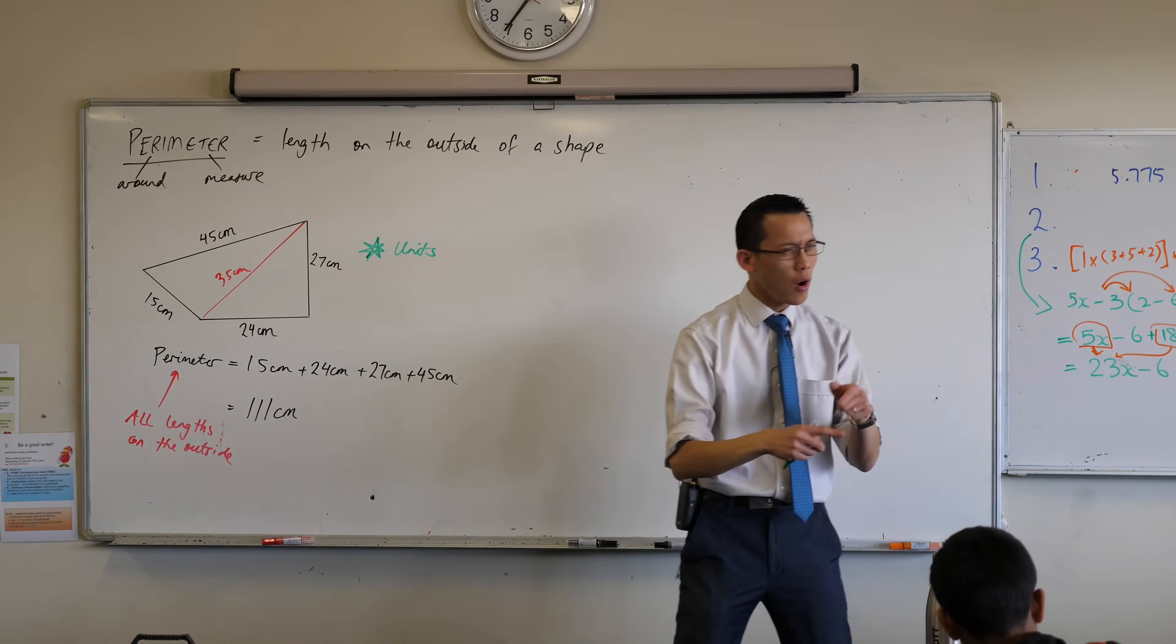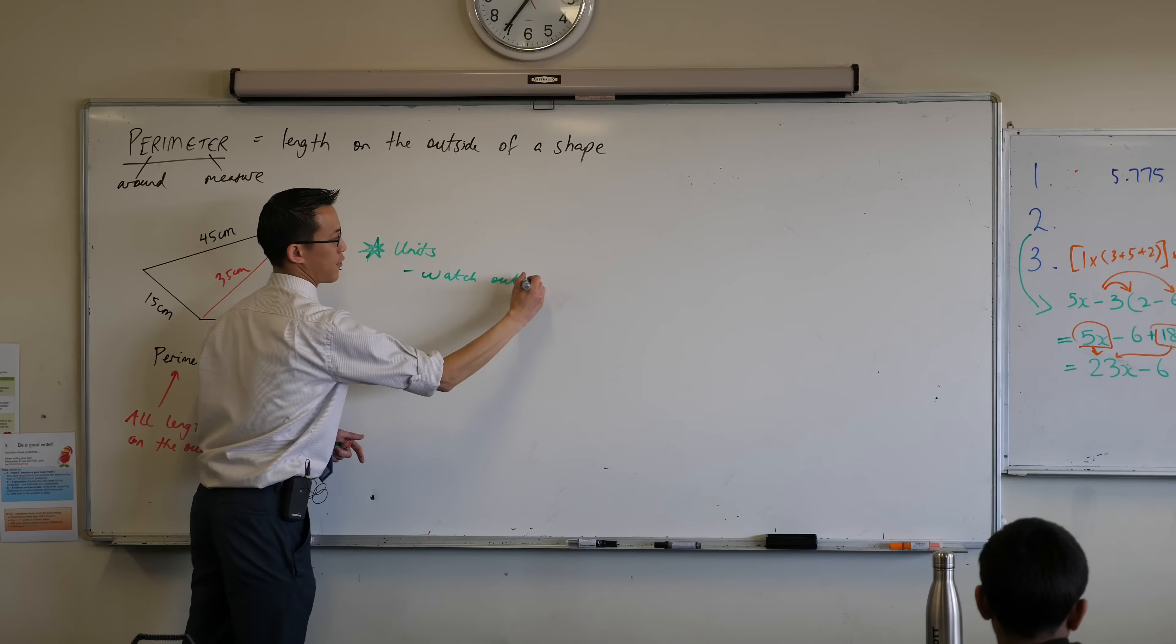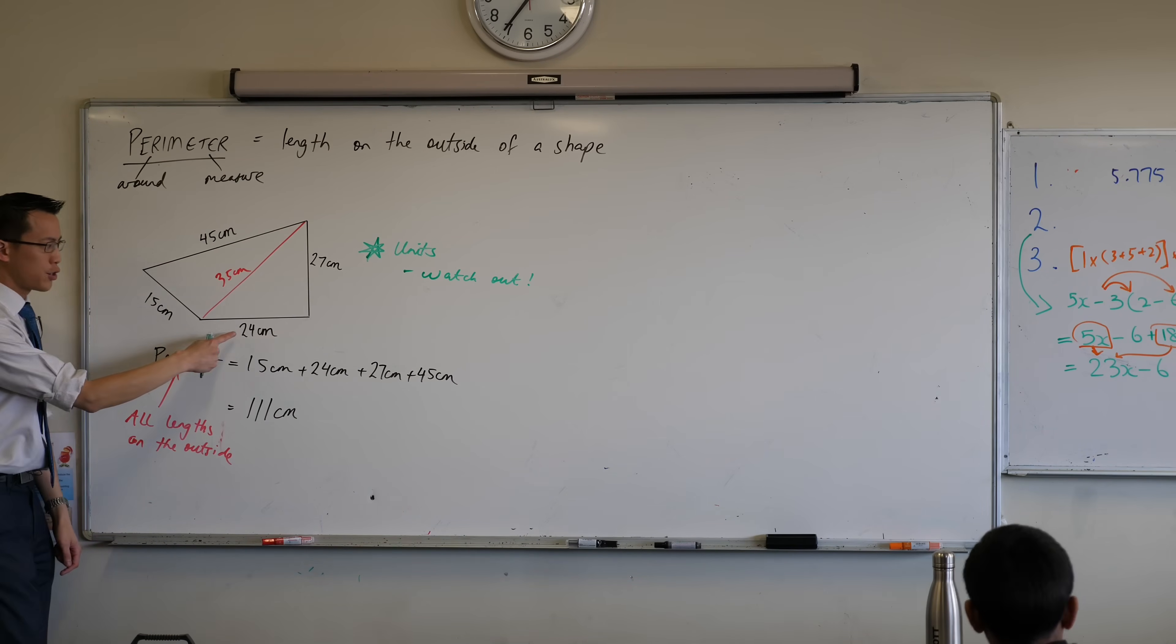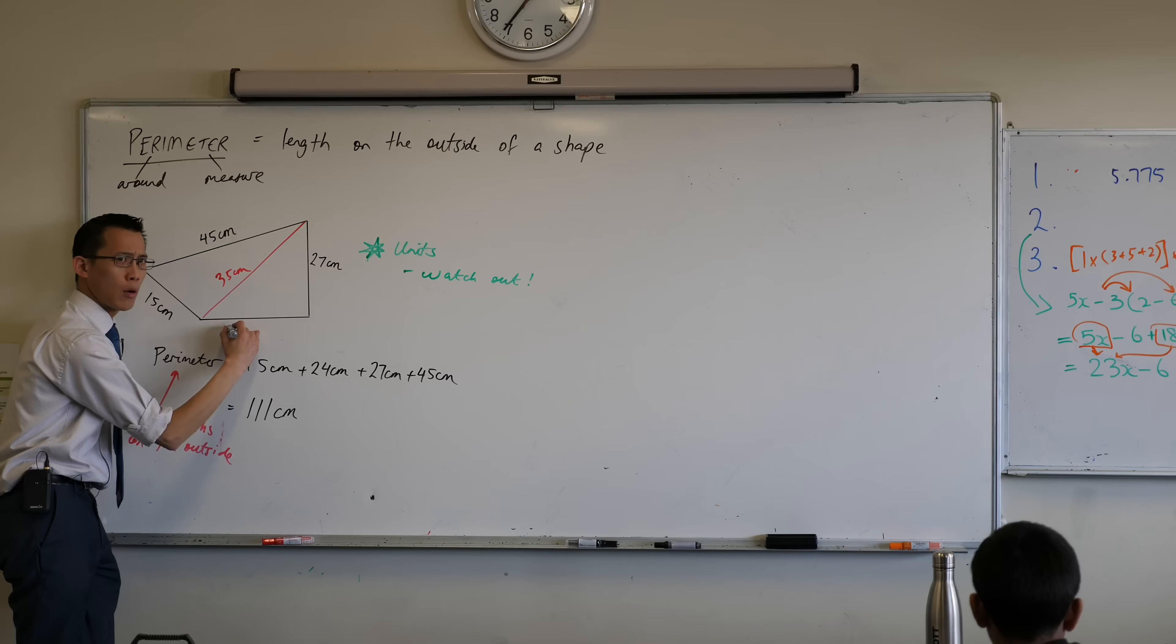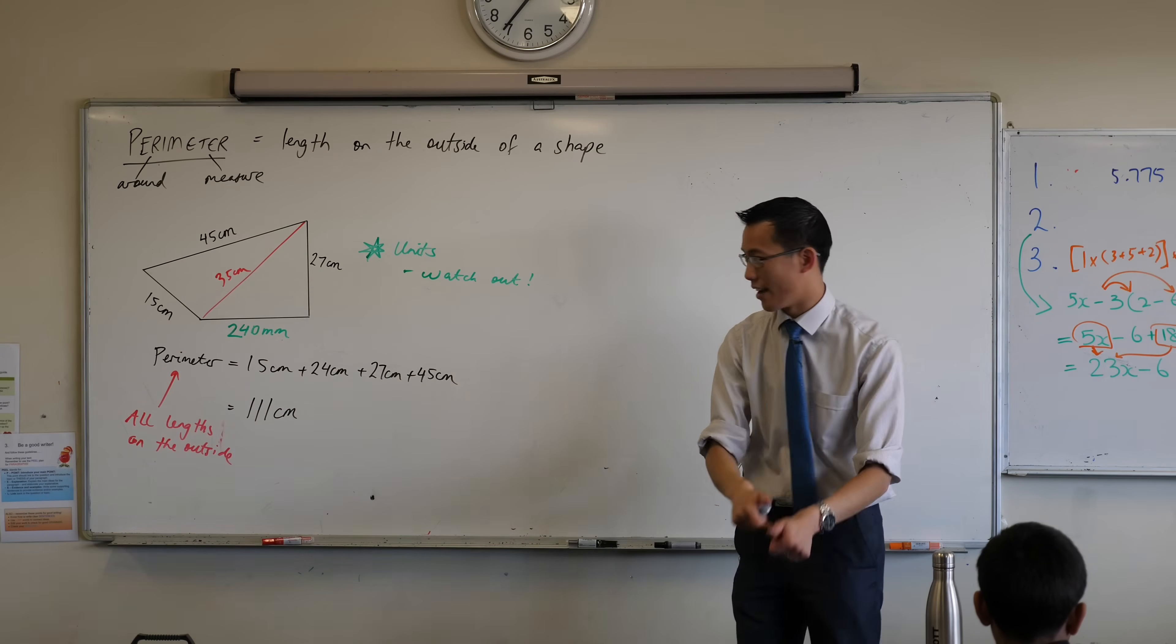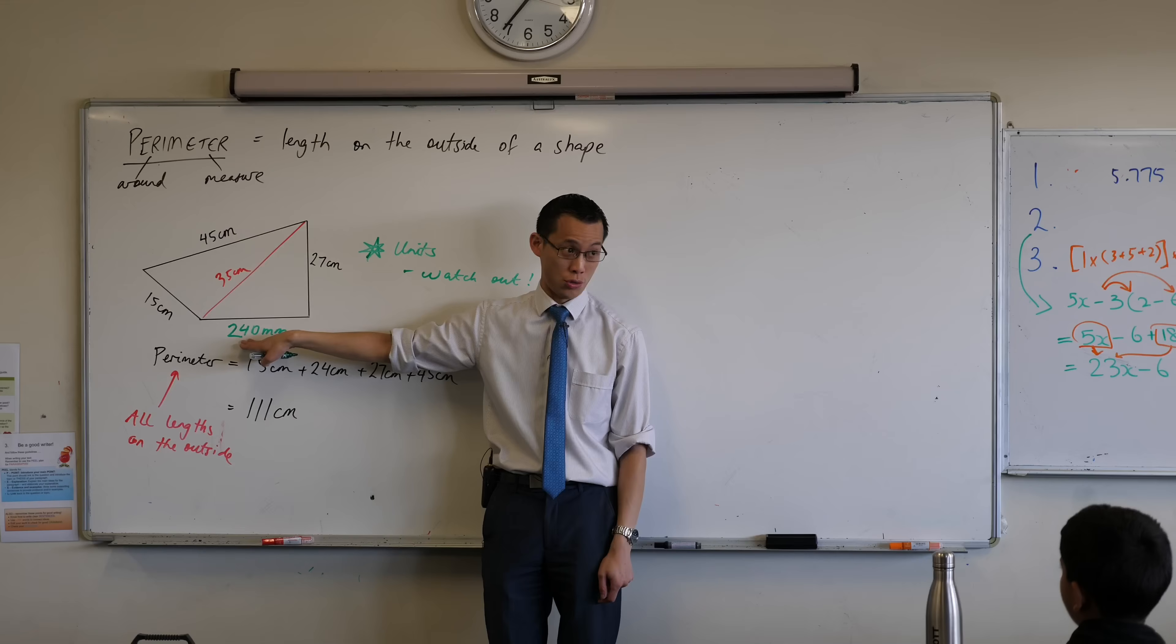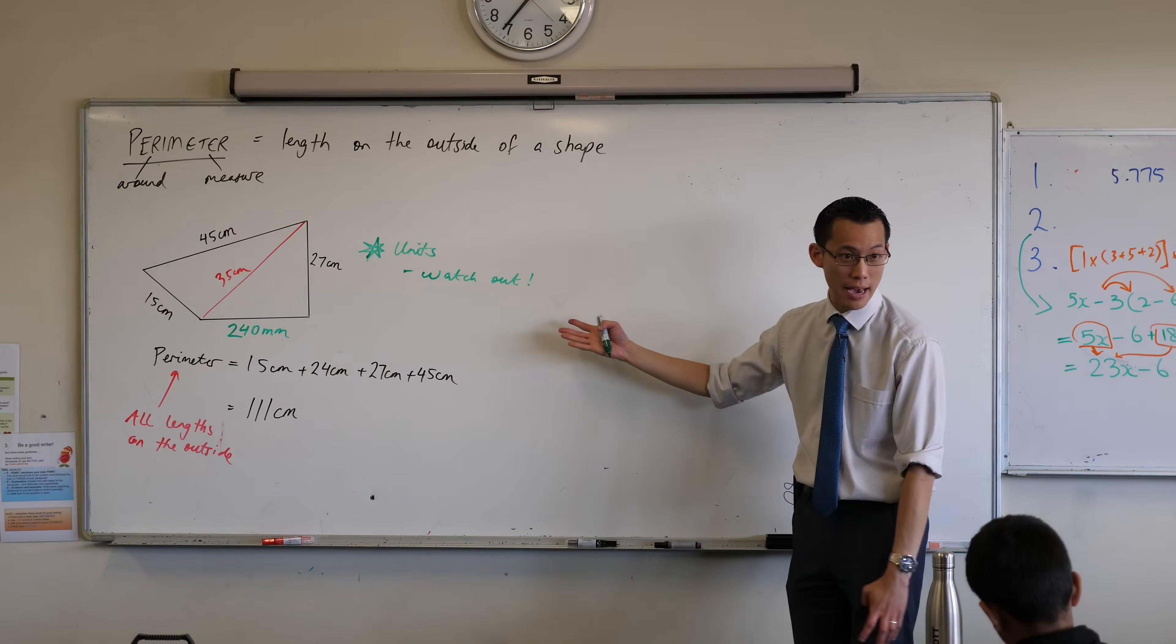Number one, watch out, they might be different. Because for instance, let's have a look at the one that I've drawn up here on the board. I wrote 24 centimeters here, but I didn't have to. I could have just as easily have written, what would that be in millimeters? 240 millimeters. That would still be the length of that side. But of course, if I went to my calculator and I added 15, 45, 27, and 240, then I'm not going to get the right answer, am I? Because I've mixed up my units.